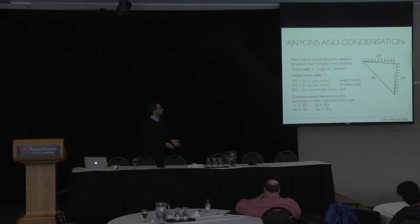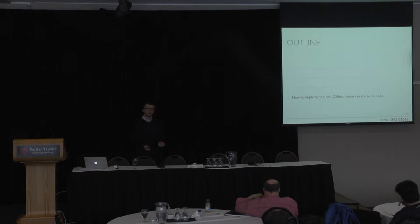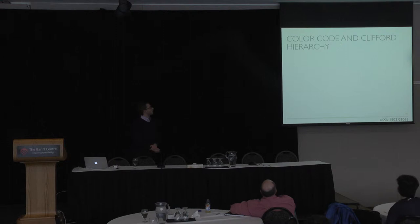So the insight, the take-home message from the slide is that there would be a correspondence between anionic labels of the toric code and the color code. And in the last few minutes, I would like to tell you about our third result, which is how to implement a non-Clifford unitary in the toric code.